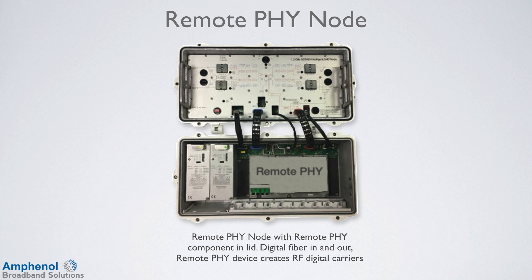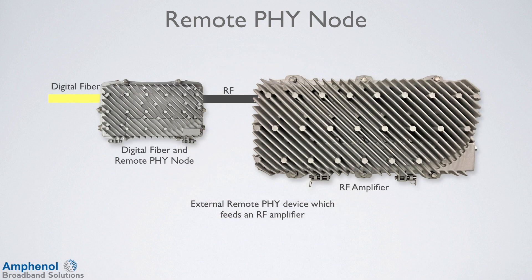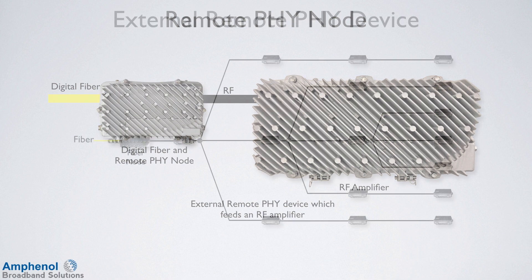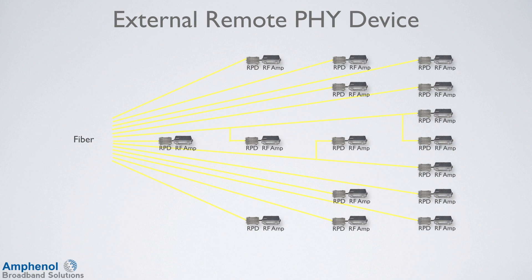The addition of the remote PHY device does increase the power draw of the node — it's been estimated that the power increase will be around 25 to 30 percent. This additional power cost will still be less than the savings in power cost at the head-end. The remote PHY device also generates additional heat, which may be a challenge to dissipate. One solution is to have the remote PHY device in a separate housing, with the digital RF output then connected to a standard RF amplifier, which also allows the reuse of existing amplifiers.